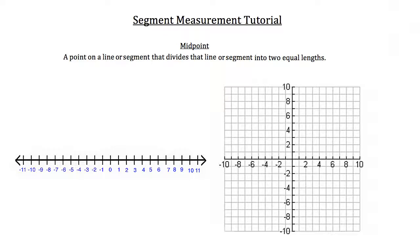On the number line on the lower left, I'm going to draw in a segment from negative 8 to positive 6, and I'll label the point at negative 8 as point A and the point at 6 as point B. So the segment we're dealing with is segment AB. The midpoint divides this segment into two equal lengths. If you count each tick mark between negative 8 and positive 6, you find that the measurement of AB is 14 units.